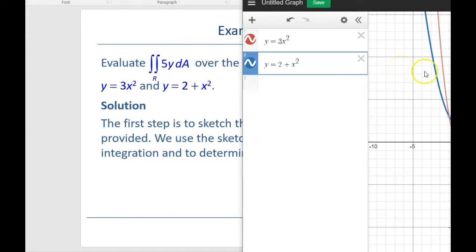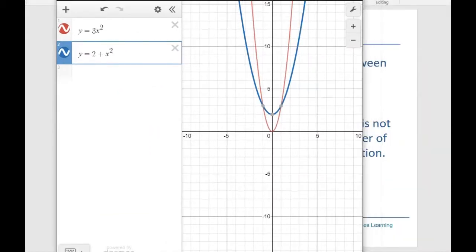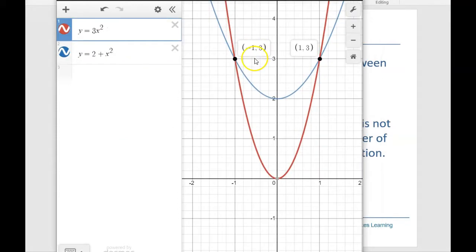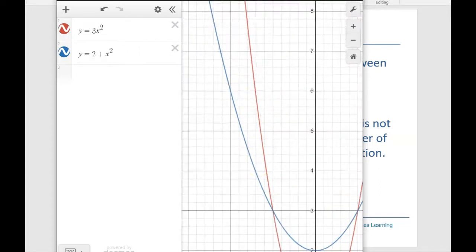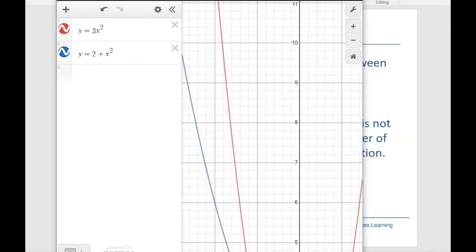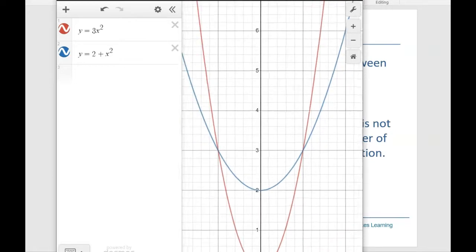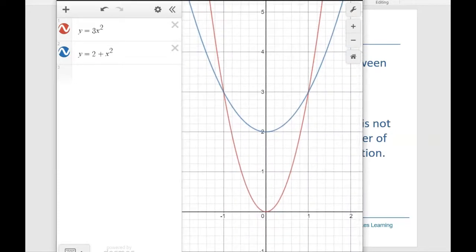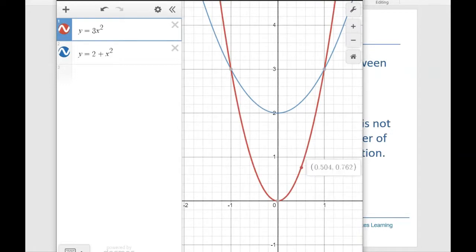If I zoom in on this, you can see our region goes from negative 1 to positive 1 for the x's. Between negative 1 and positive 1, the red curve is always below the blue curve. If I go outside that region, the red curve is always above it and never reverses. This is the bounded region we're talking about.